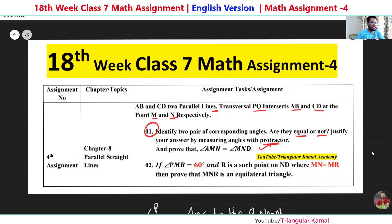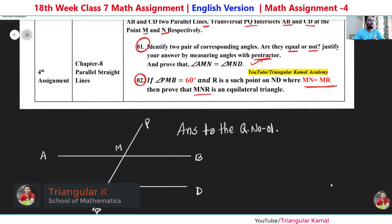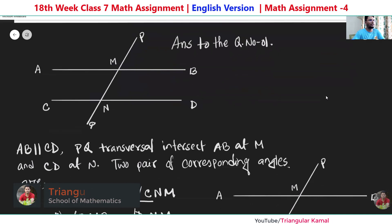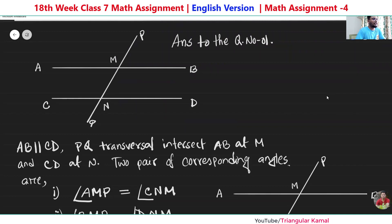Another question has one angle given as 60 degrees, with the condition that two sides are the same, and according to the given information we have to prove that triangle MNR is an equilateral triangle. Now let's answer question number one. For the first part, according to the question we can draw the figure: AB and CD are two parallel lines and PQ is a transversal intersecting AB at point M and CD at point N.